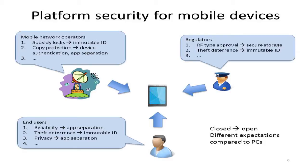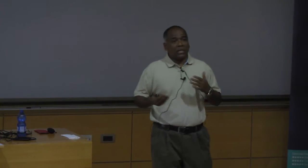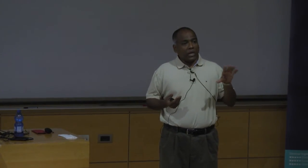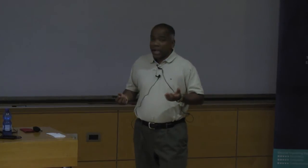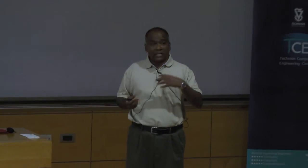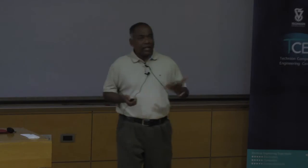Over time, these closed systems became gradually opened in the sense that you can extend the functionality of a device by installing software from different sources — not just the provider of the original device, but also other developers around the world. This transition happened in a more controlled way than on the PC side, because different stakeholders had different requirements. The PC started out as an open system and has remained open, whereas mobile devices had a different starting point and trajectory, which explains why we have fairly advanced security measures in mobile devices.